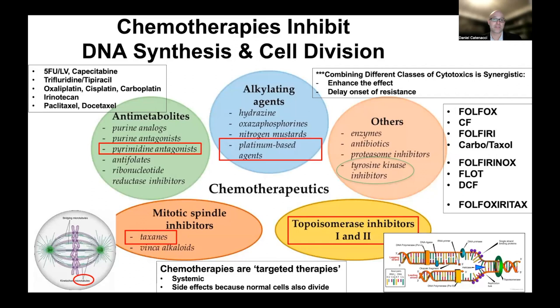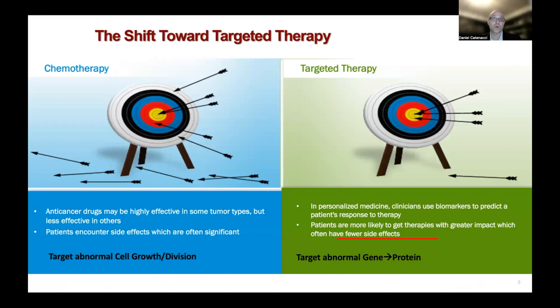As a quick review, we covered the various types of chemotherapy and examples often used in combination in gastroesophageal cancers. Chemotherapy's goal is to inhibit cells that are dividing, which is the definition of cancer. However, there are side effects because some of our normal cells also divide. We then shifted to targeted therapies, which leverage our understanding of cancer genetics to target specific abnormalities, hopefully leading to fewer side effects and more precise targeting.